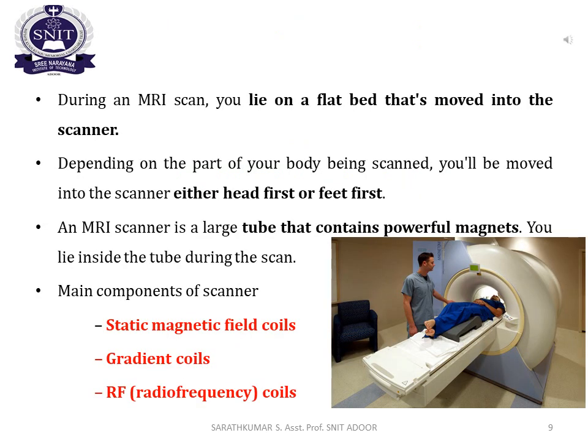During the MRI scan, you lie on a flat bed that is moved into the scanner. Depending on the part of your body being scanned, you will be moved into the scanner either head-first or feet-first. An MRI scanner is a large tube that contains powerful magnets, and you lie inside the tube during the scan. The main parts are static magnetic coils, gradient coils, and radio frequency coils.